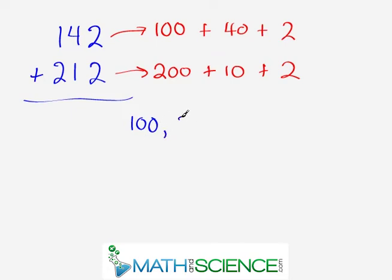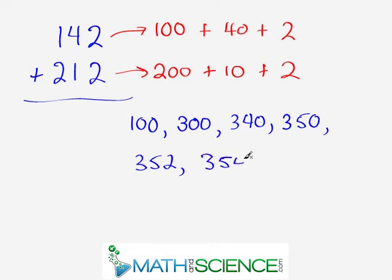I'm going to keep track of the new subtotal as 300. Now 300 plus the 4, which is really value of 40, gives us 340. Then we move down, 340 plus 10 is 350. Now we move up, 350 plus 2 is 352. Finally, 352 plus 2 is 354, and this is the answer.